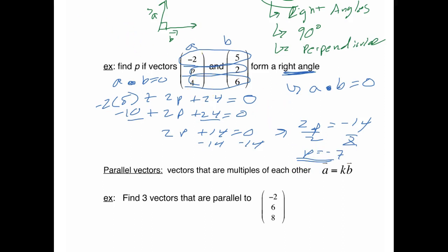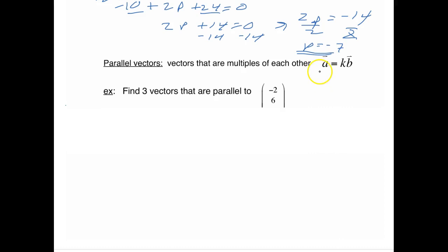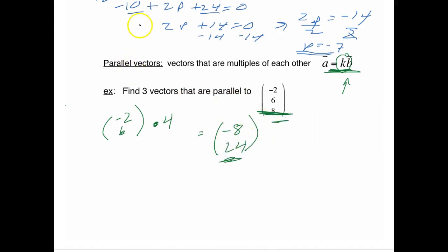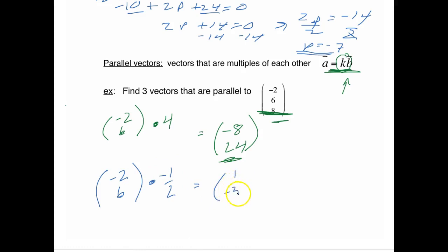Onto parallel vectors. Parallel vectors are just multiples of each other — if you multiply any vector by a constant, they are parallel. For example, take the vector negative 2, 6. Multiply by 4 to get negative 8, 24 — those two are parallel. Multiply by negative one half to get 1, negative 3 — also parallel. Multiply by 10 to get negative 20, 60 — parallel as well. All you do is multiply by a constant.